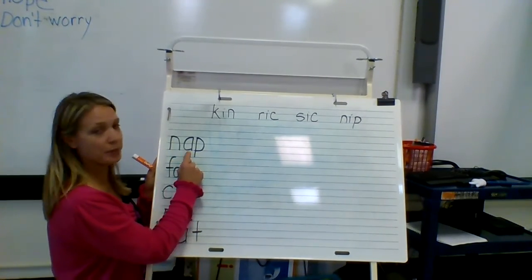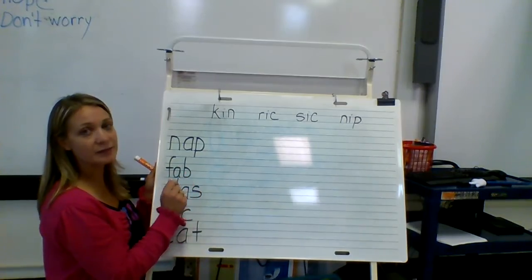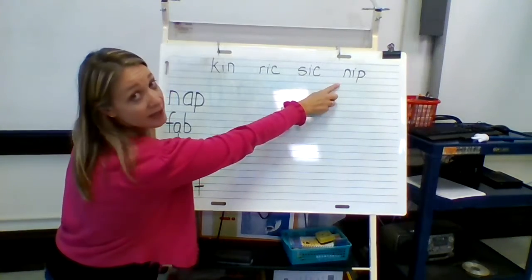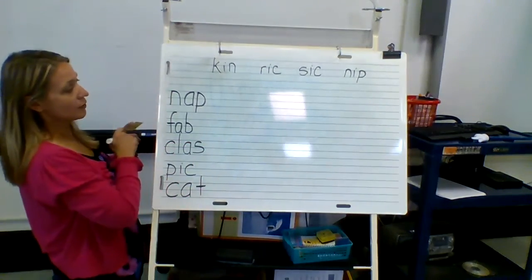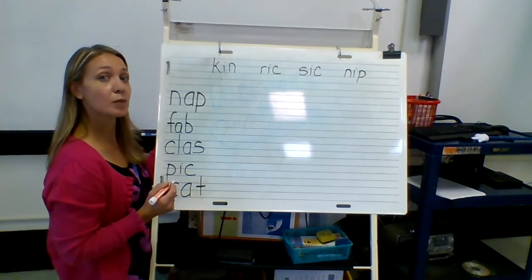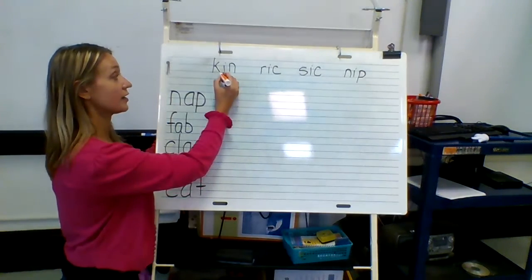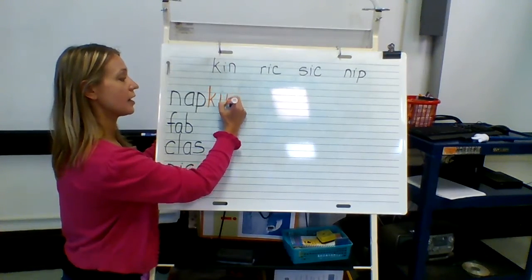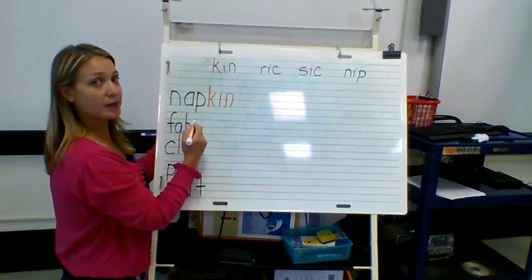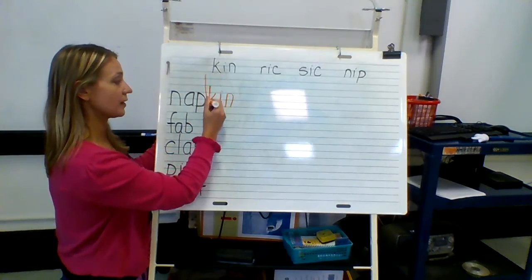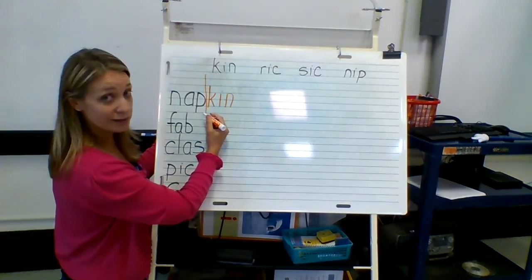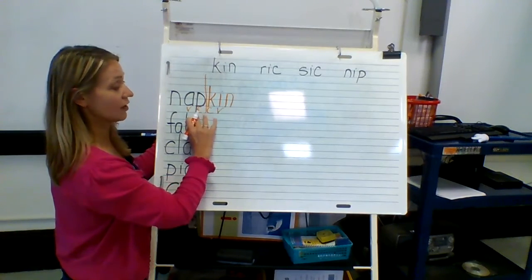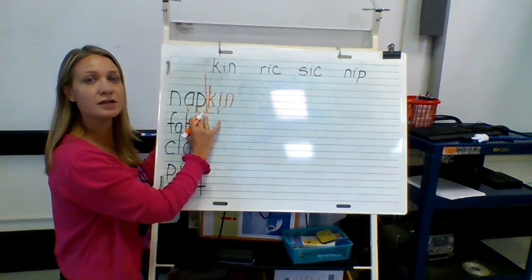So here we have 'nap.' What would we add to make a word — kin, rick, sick, or nip? Well, at lunch I'd like to use a napkin when I'm eating, so we're going to add K-I-N. Nap-kin — napkin. We would divide napkin into two syllables between the P and the K. Remember the vowel-consonant-consonant-vowel pattern from the other day? See the two consonants there? That's why we can divide it into two syllables.